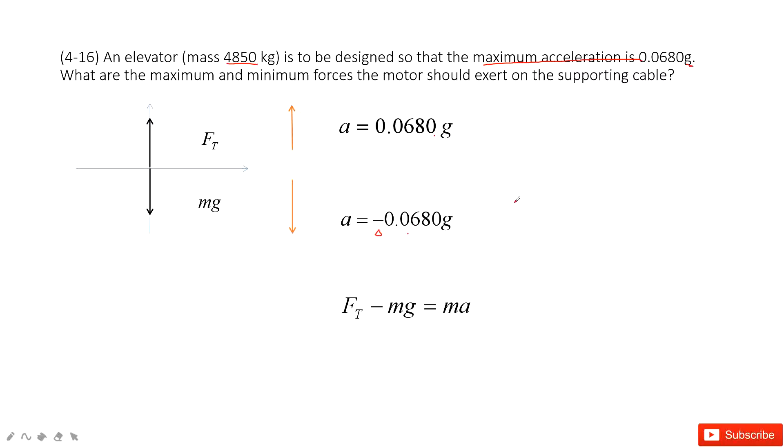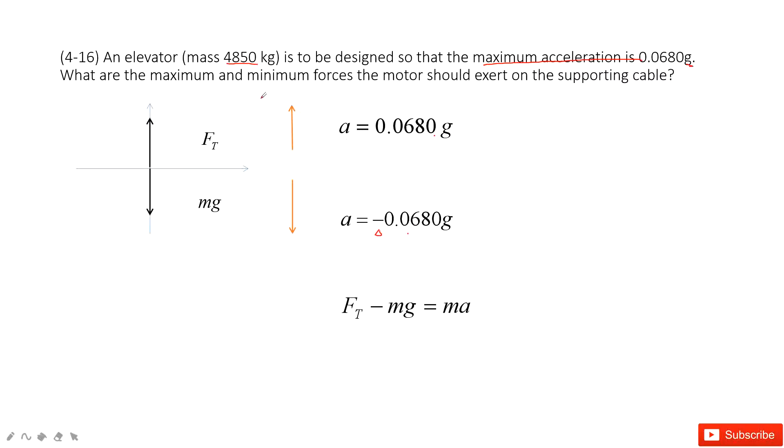This way, we can get the maximum and minimum force. When we consider Newton's second law, we get the force can be positive. This force equals mass times acceleration plus gravity g.